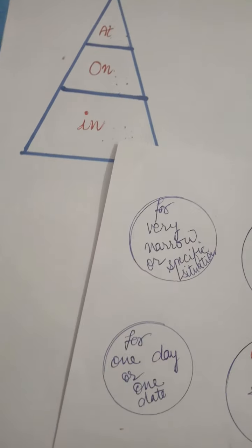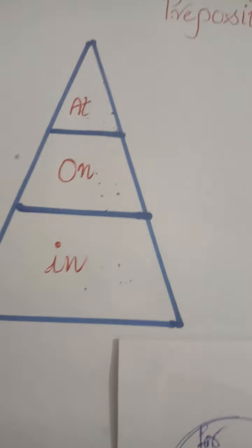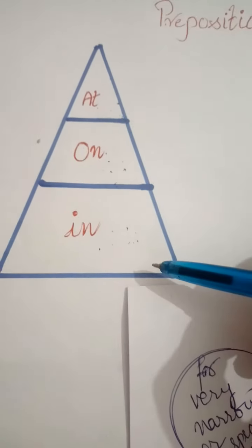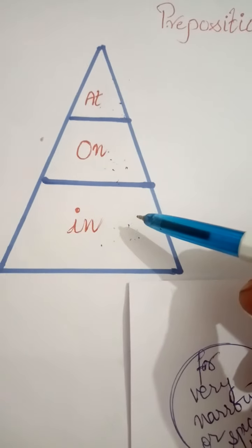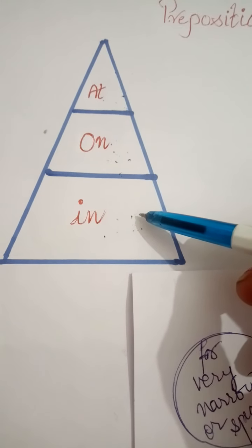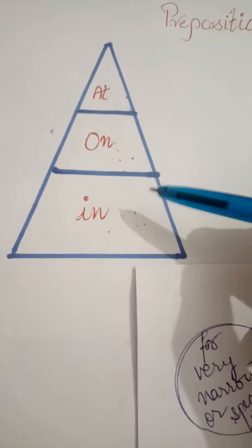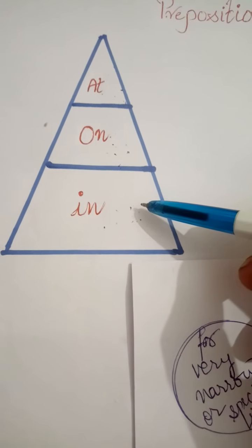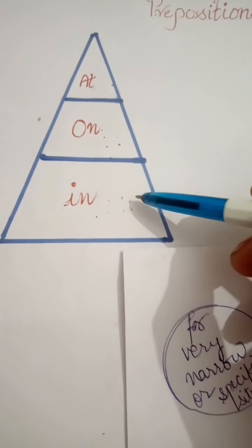Now, the third preposition is in. In covers the widest part of the triangle. So it covers things like months, seasons, years, decades, centuries, and any kind of long period.